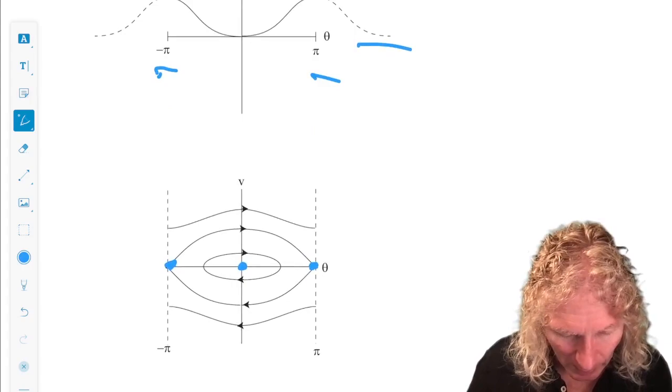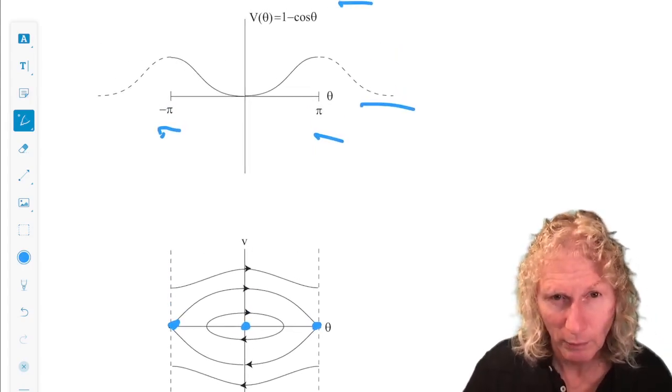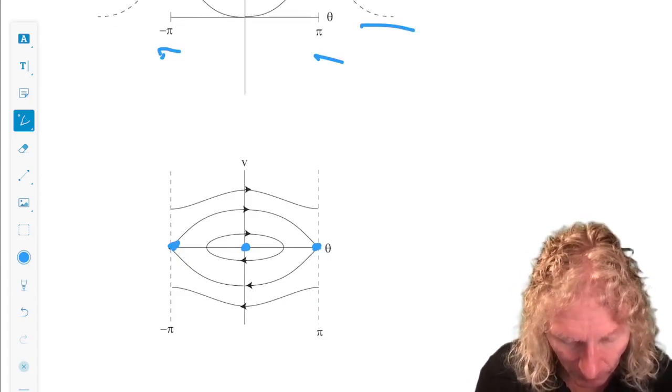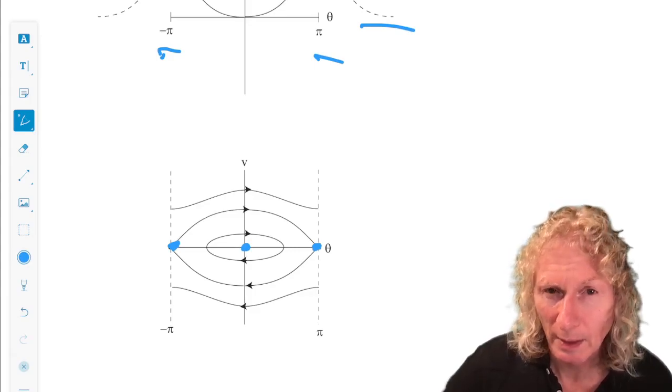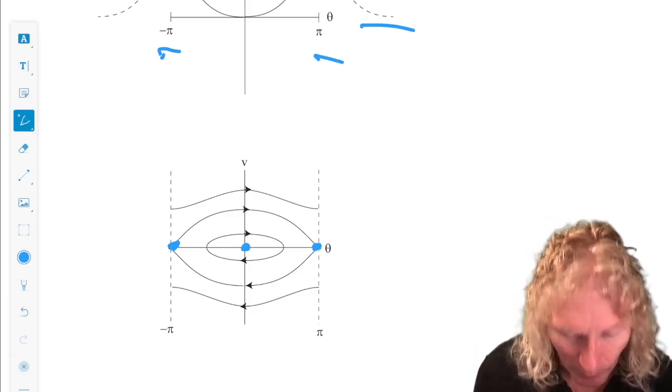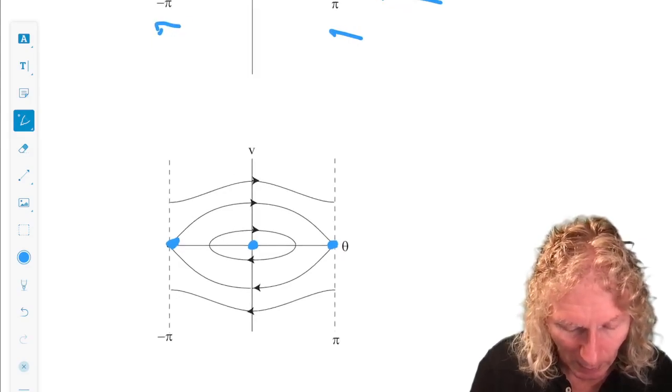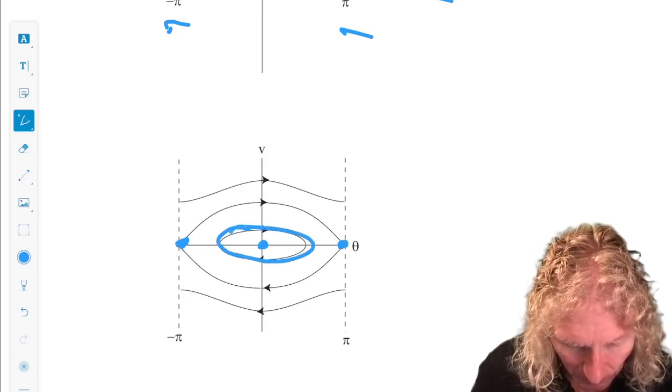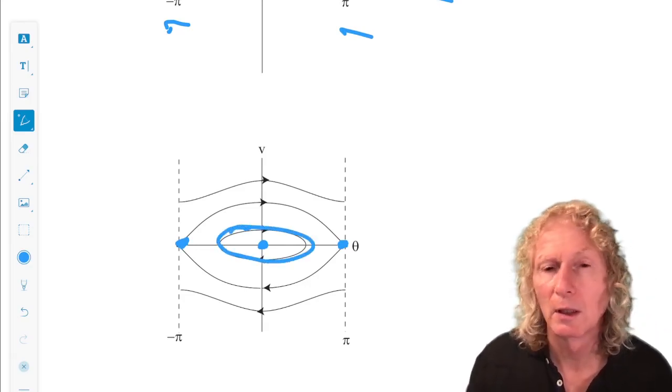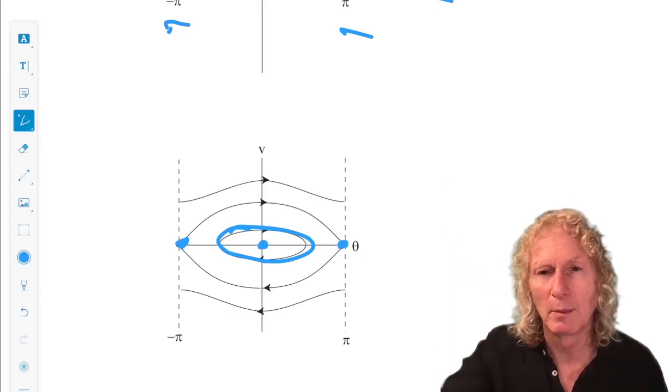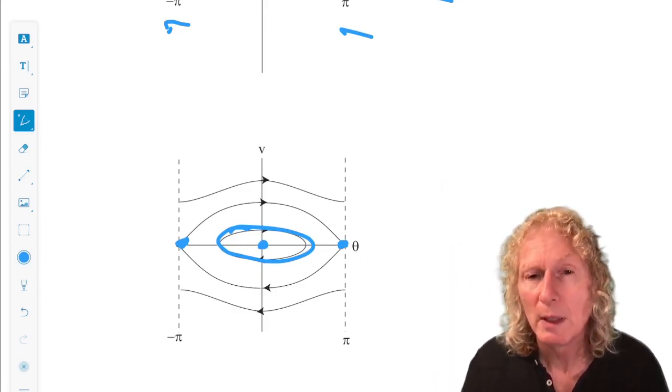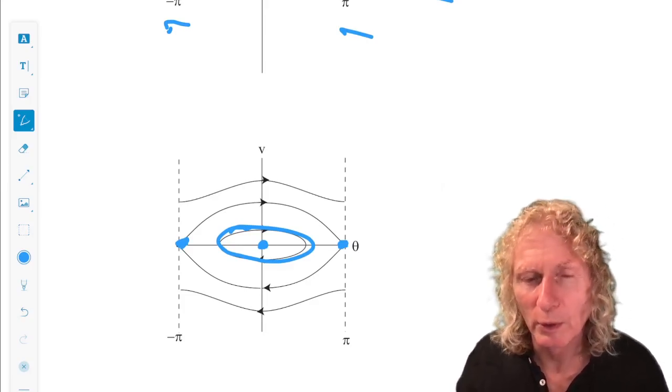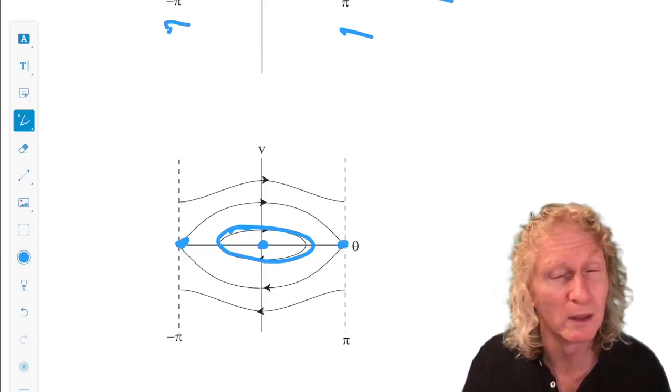Using the same technique before, we have two separatrices connecting the saddle points, and those separatrices separate three families of periodic orbits. There's one inside the separatrices, and these are called librations. They just rotate back and forth, meaning the angle in which they oscillate is bounded by an angle less than pi.